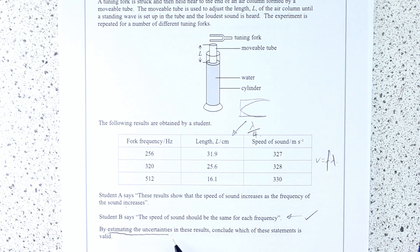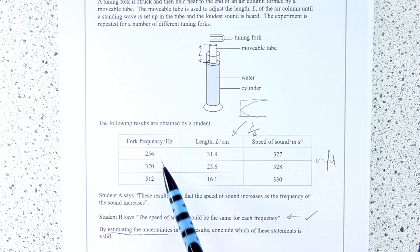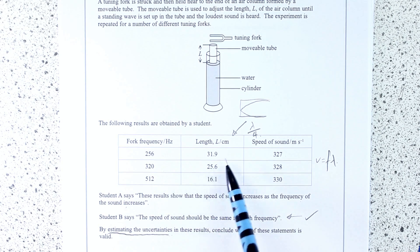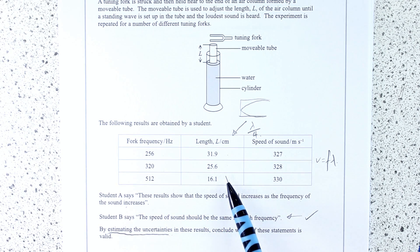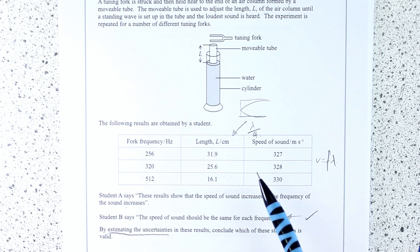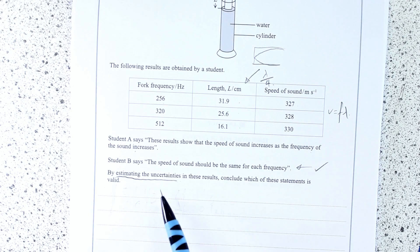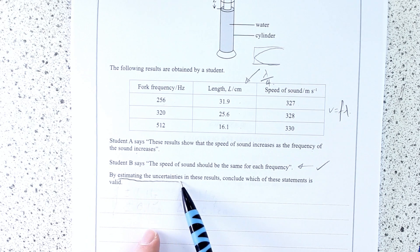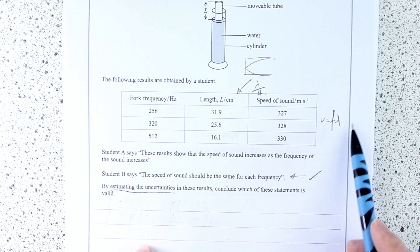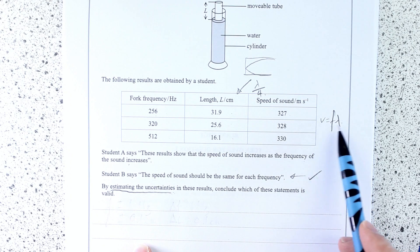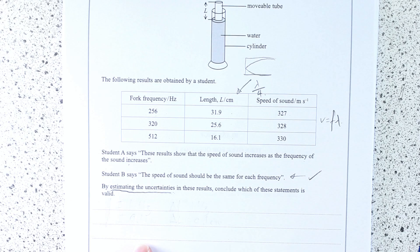So what you need to know is: how do I estimate uncertainties? For each point in this case we've only got one result, so we can't use something like half the range or distance from the mean. We're looking at whether we can sensibly estimate the uncertainties in these results, and then know how we combine uncertainties when using a product or a division with two quantities.